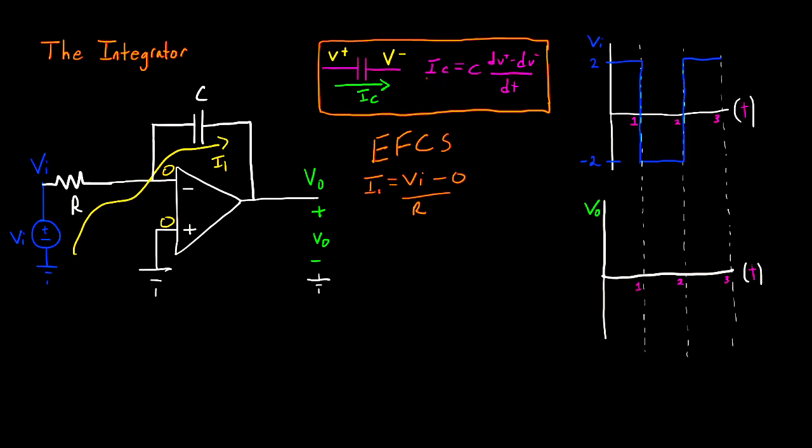The equation for a capacitor is that IC is equal to the capacitance value multiplied by the derivative of the potential difference across it. In this case, you can say the derivative of one side of the capacitor, V plus, minus the derivative of V minus per unit time.